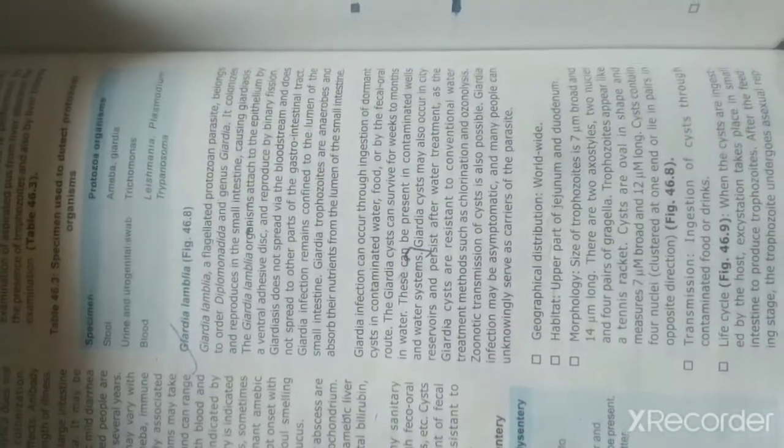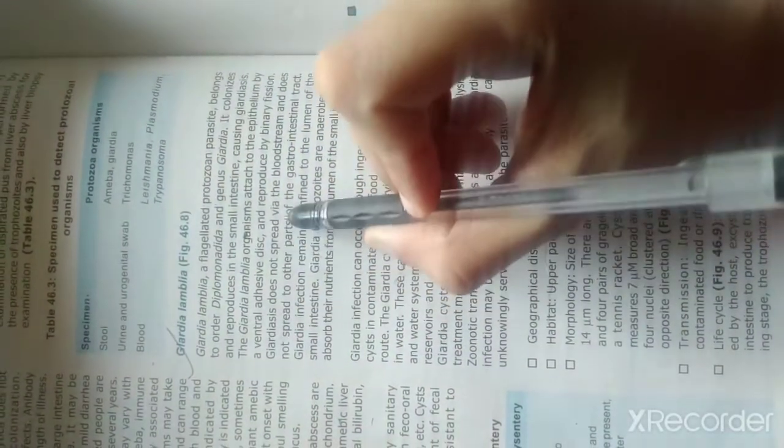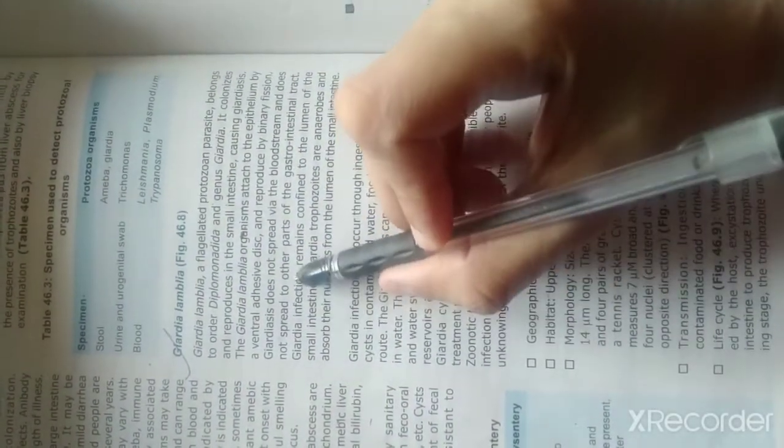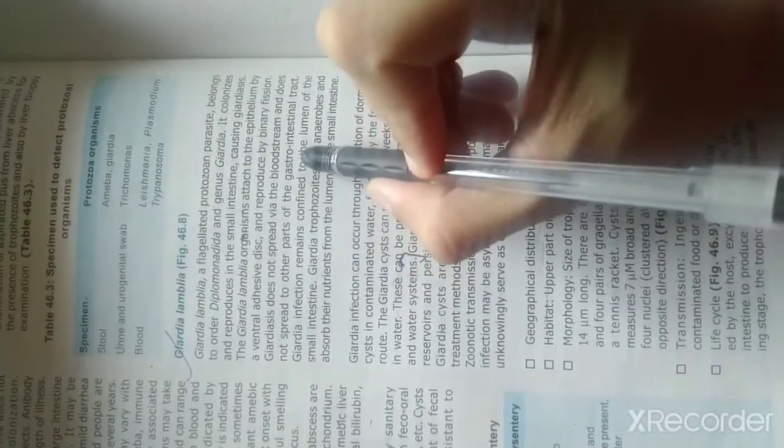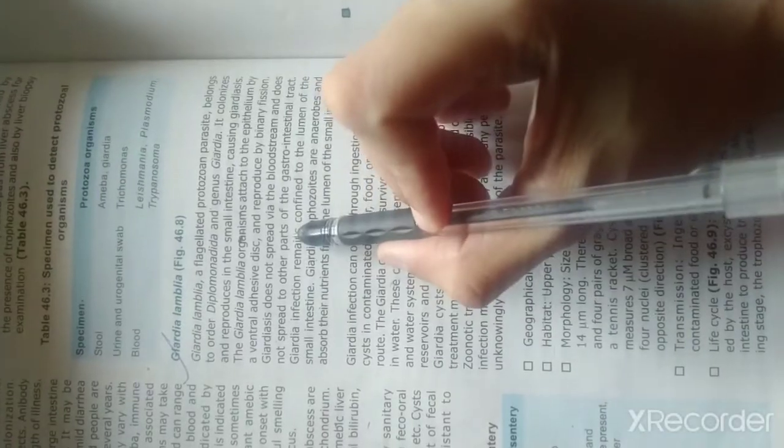It reproduces by binary fission, which means 2-4-4-8. Giardiasis does not spread via the bloodstream and does not spread to other parts of the gastrointestinal tract.